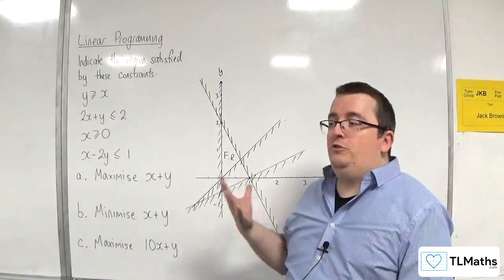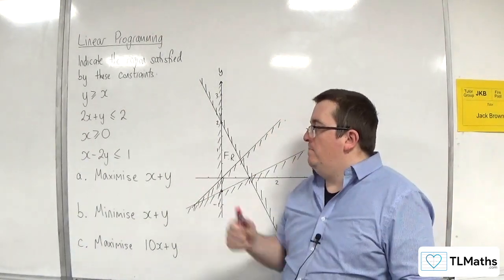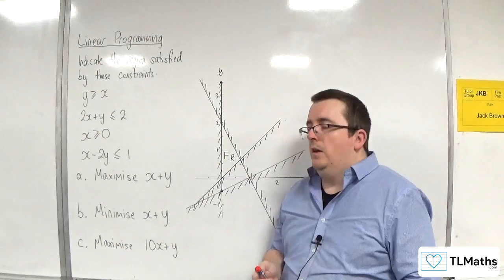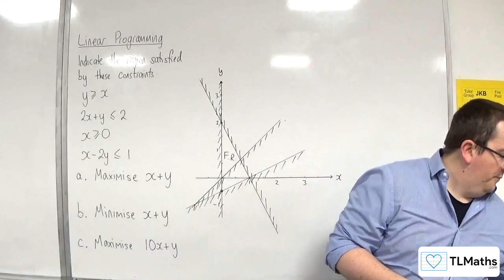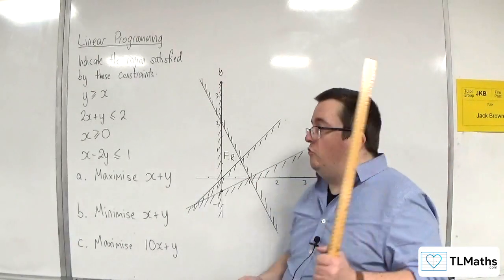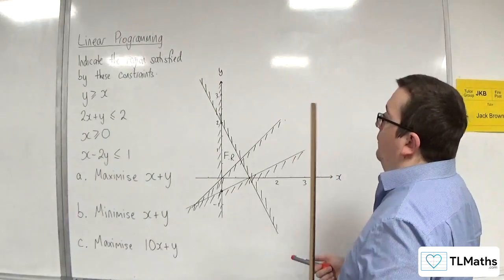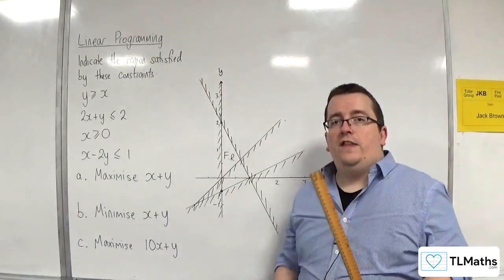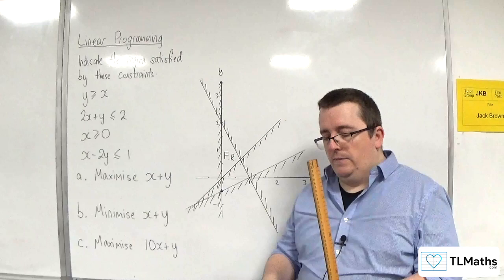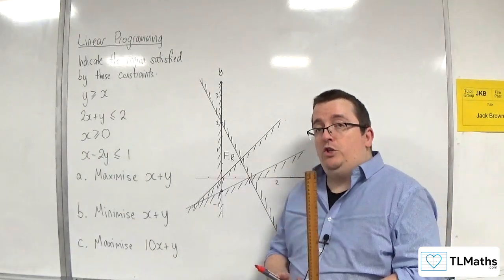And the question is, how do you do that? So, let's try and maximize X plus Y. So, what we're going to do is I'm going to draw on to this graph an example of the objective function, and this is referred to as an objective line.